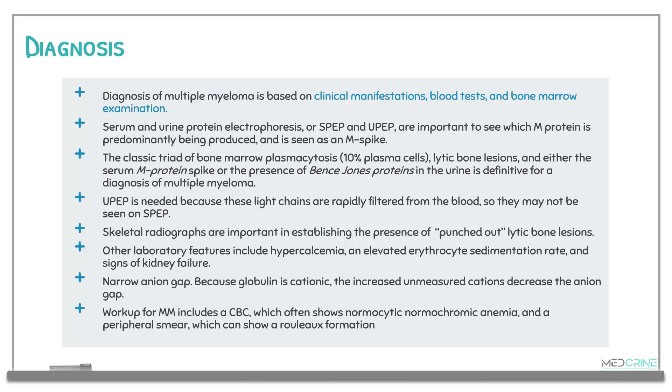Urine protein electrophoresis is needed because light chains are rapidly filtered from blood and may be missed on serum protein electrophoresis alone. Skeletal radiography is important to identify punched-out lytic bone lesions. Other laboratory features include hypercalcemia, an erythrocyte sedimentation rate greater than 30, and features of kidney failure. Patients typically present with a narrow anion gap because globulin is cationic and increased unmeasured cations decrease the anion gap. A complete blood count shows normocytic normochromic anemia, and peripheral blood smear shows rouleaux formation.